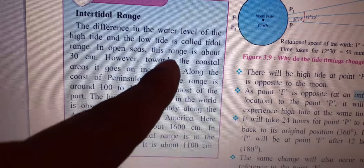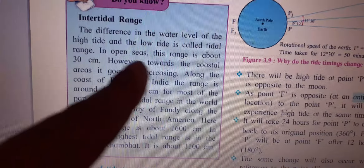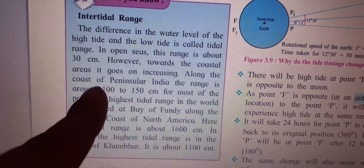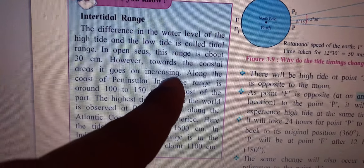In open seas, the tidal range is about 30 cm. However, towards the coastal area it goes on increasing. Is this clear?